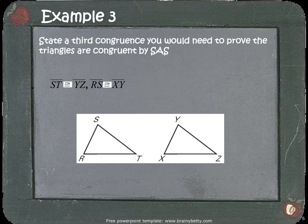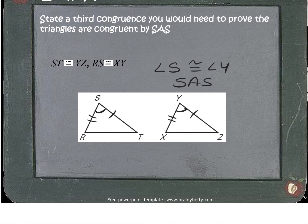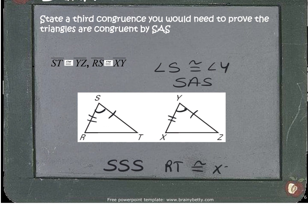For the next problem, we need to find the third congruency to prove triangles congruent by SAS. We're already given ST congruent to YZ, and RS congruent to XY. The third piece needed is the included angle: angle S is congruent to angle Y. Once we learn side side side later this week, a third piece would also be RT congruent to XZ, which would allow us to use SSS.